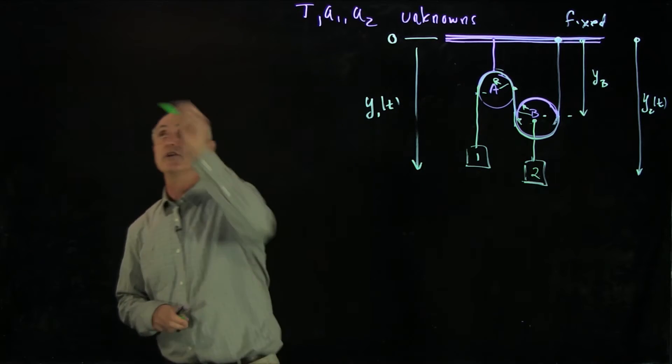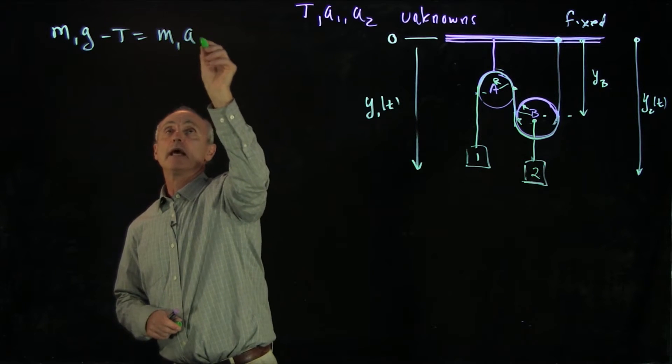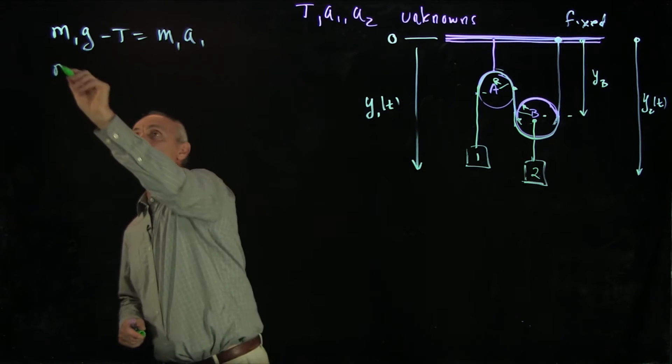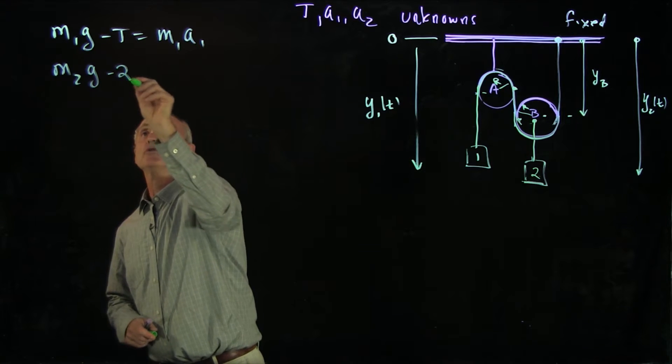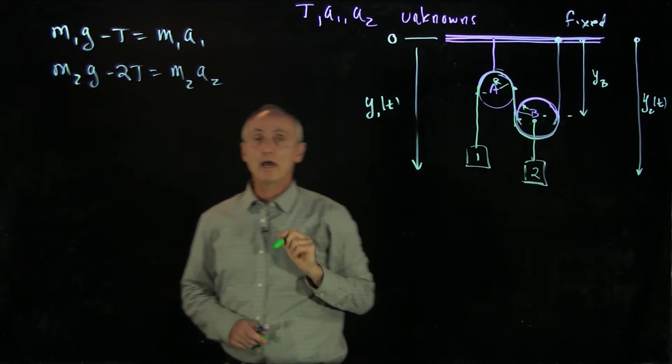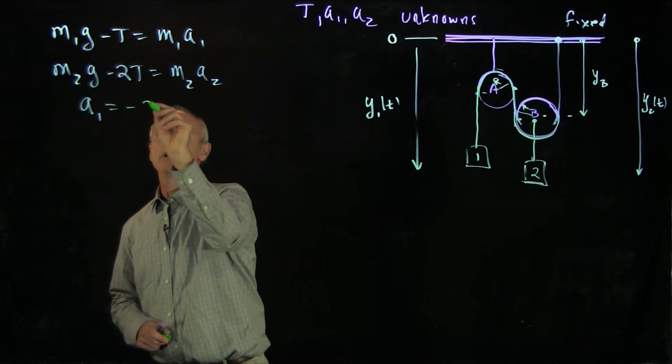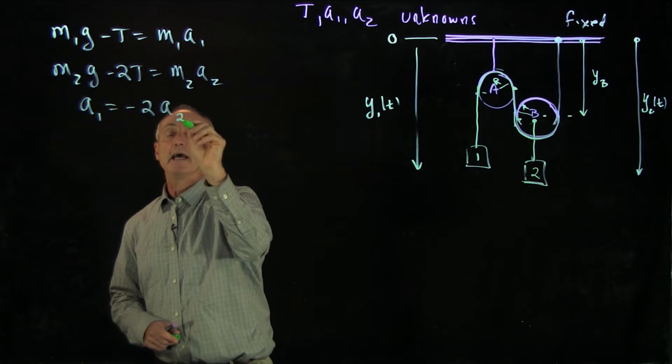Let's recall the equations that we found. We had m1g minus t was m1a1. And we had m2g minus 2t was equal to m2a2. And we also had the constraint condition between the accelerations that a1 was minus 2a2.